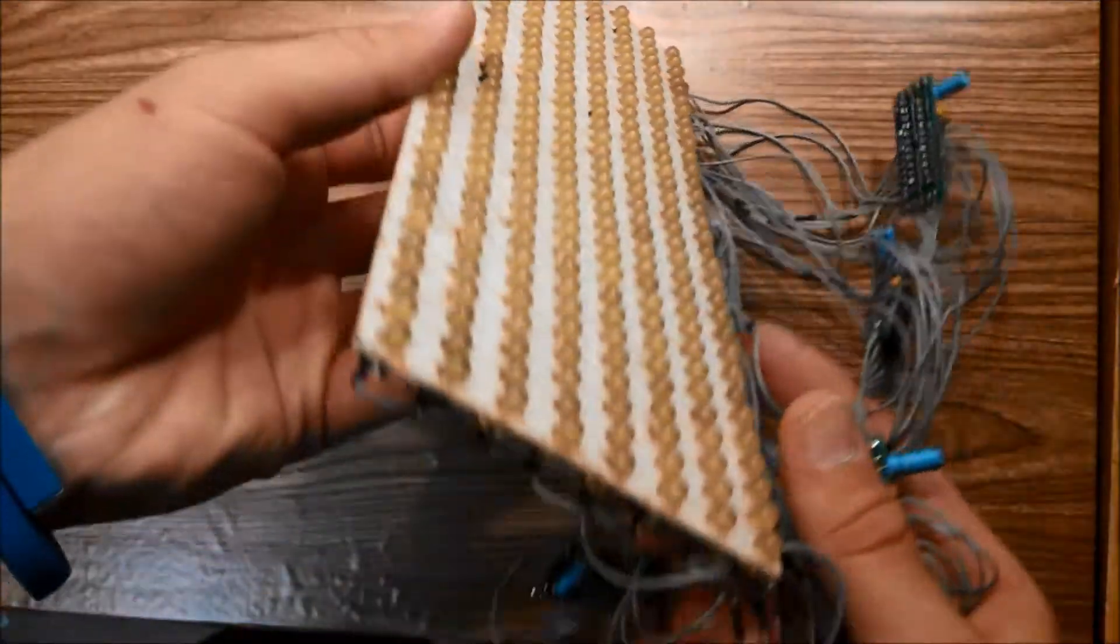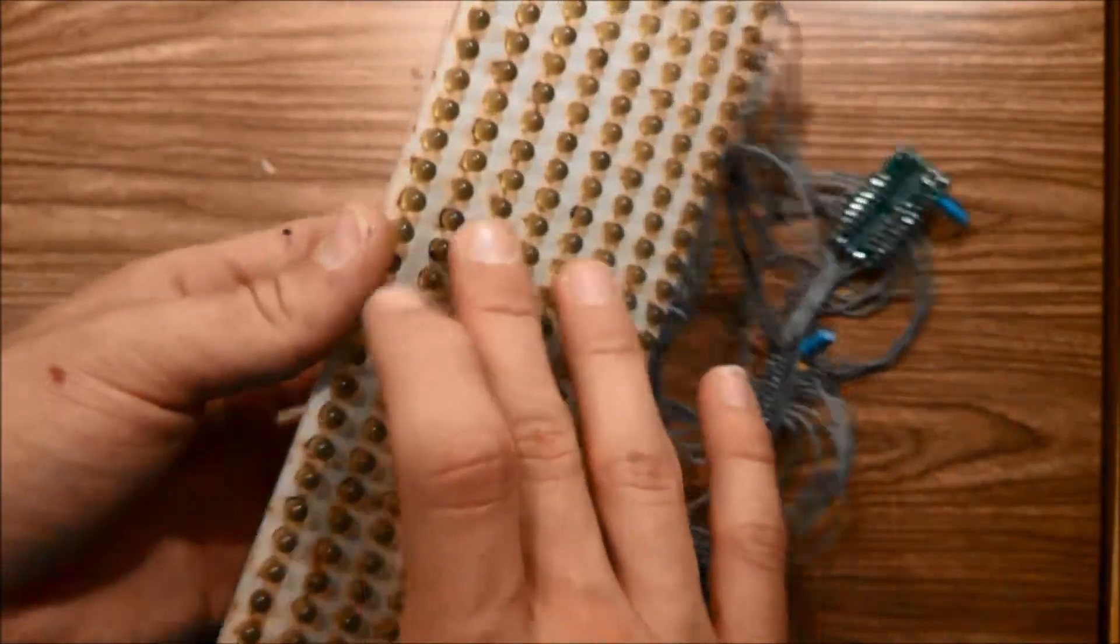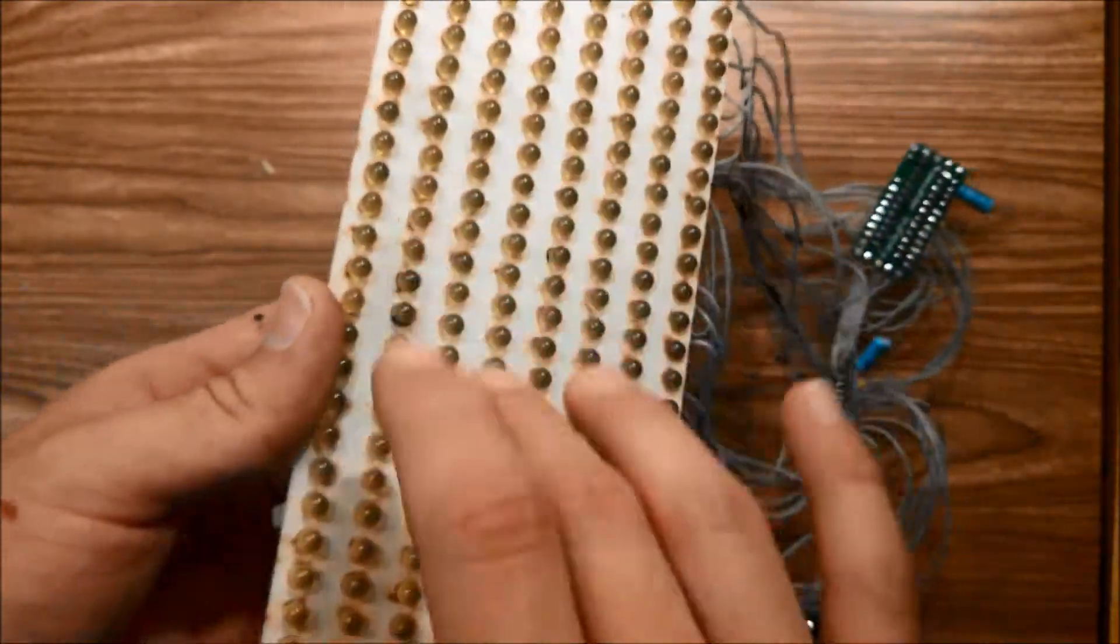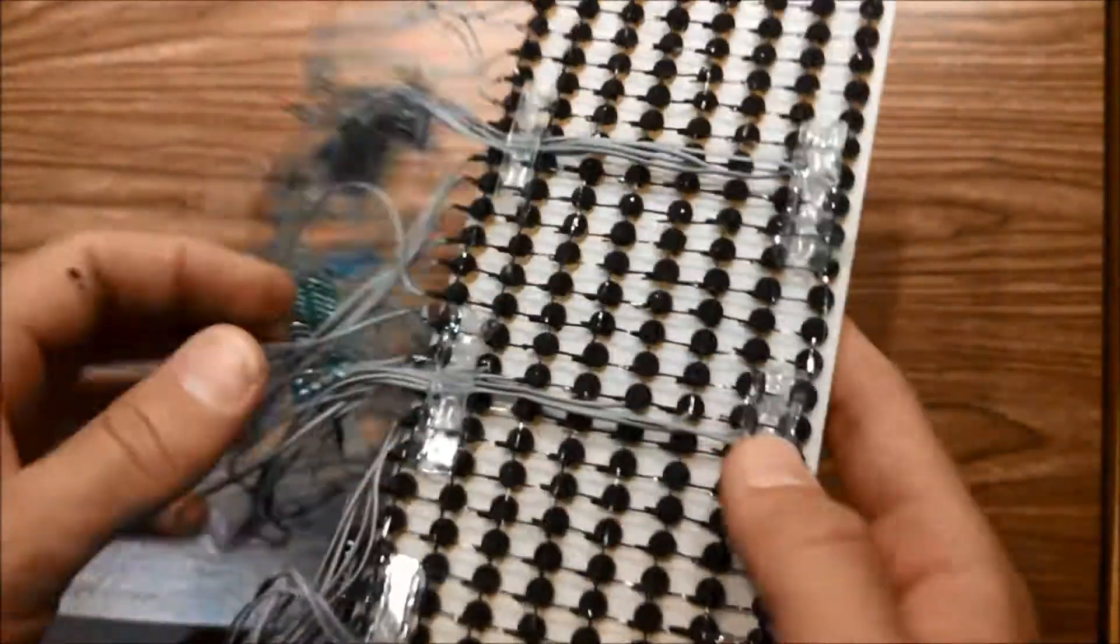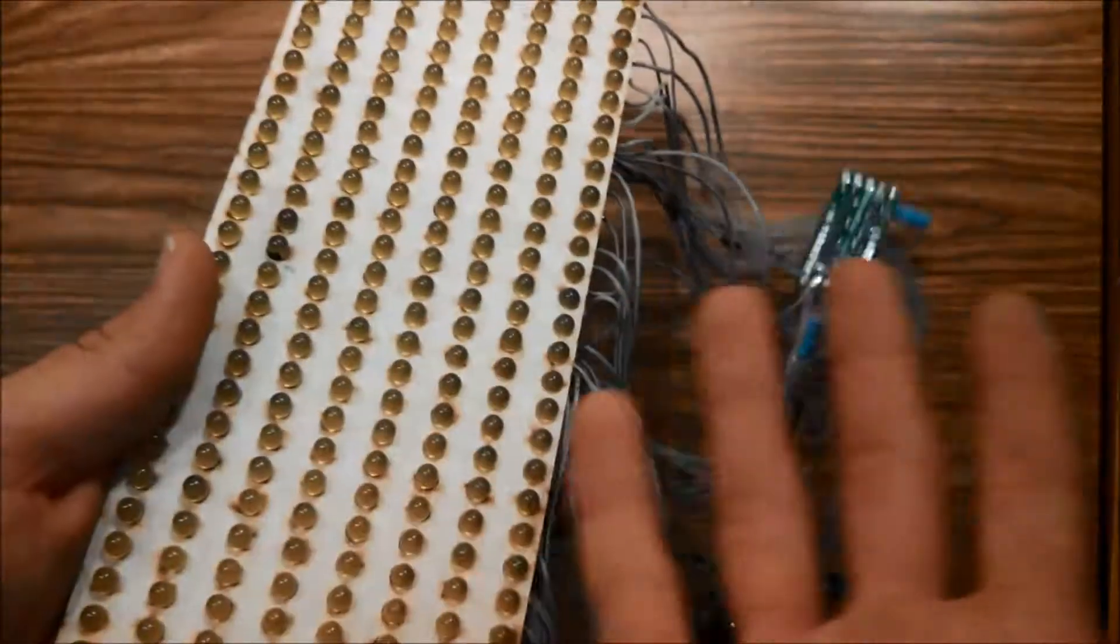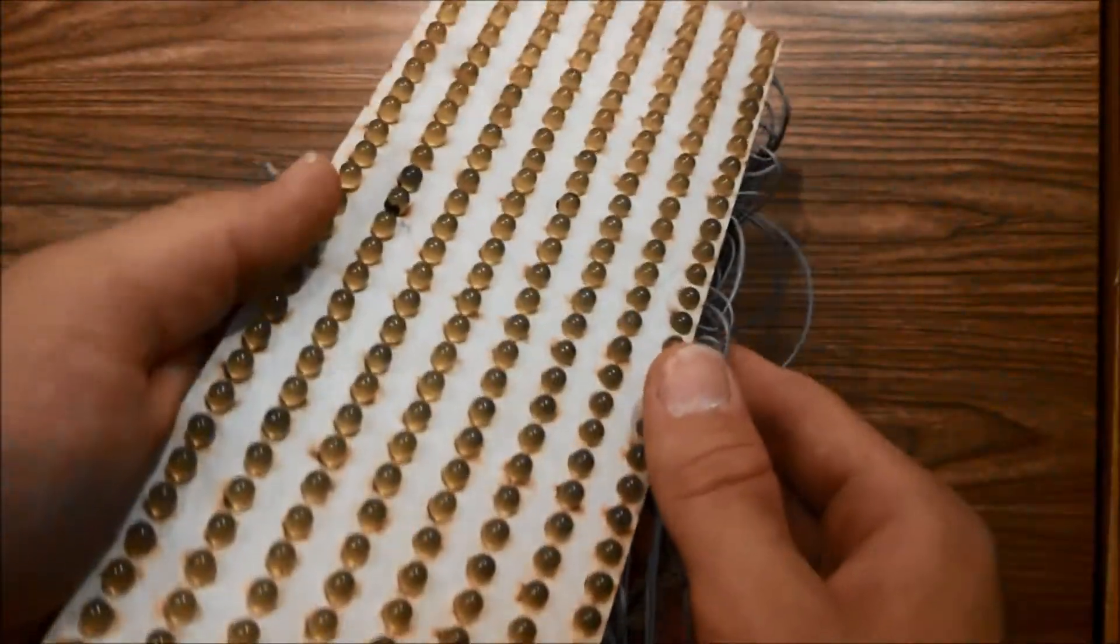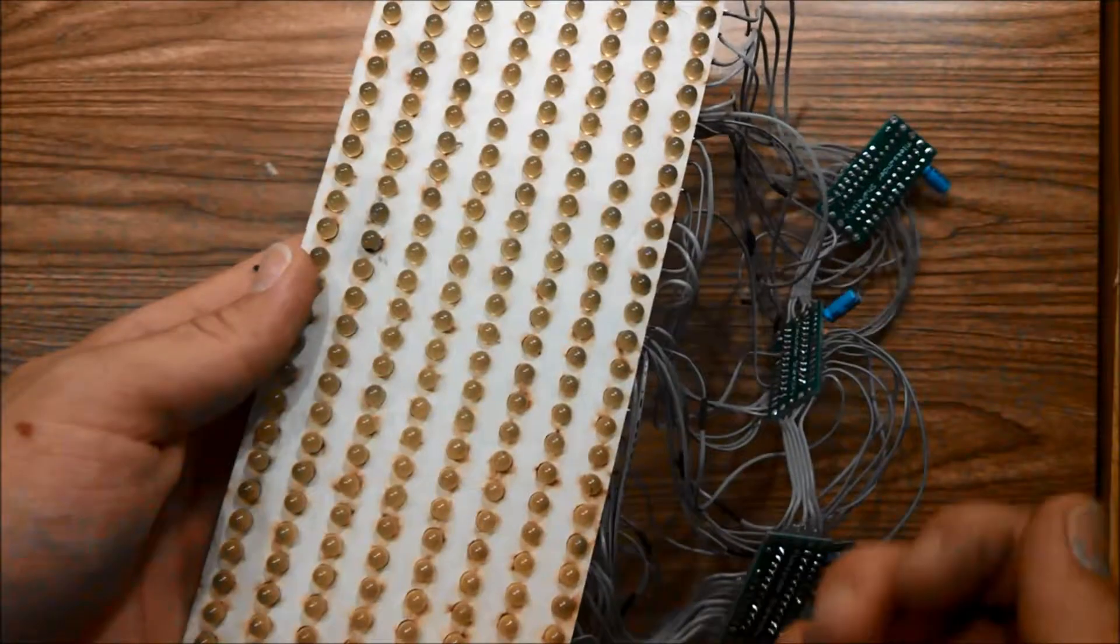So once you have your whole LED display assembled, ready to go, you've cleaned off all the excess paint on the surface of the LEDs, you've glued all the matrices together and you've made sure everything works and is ready to install, I'm going to show you how to put this thing into a helmet.